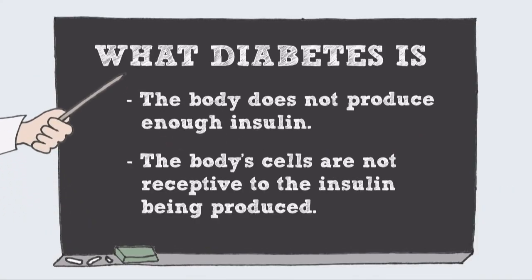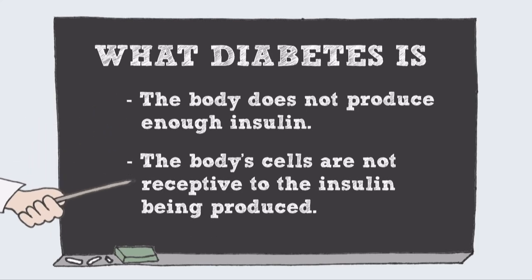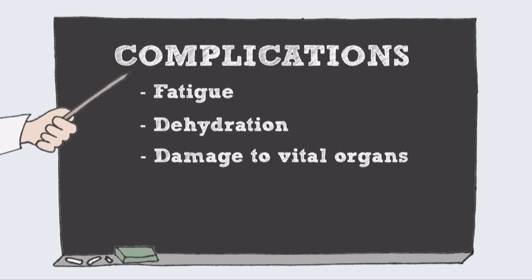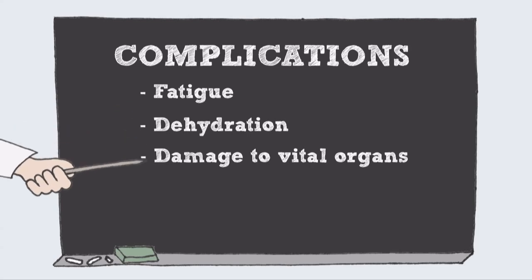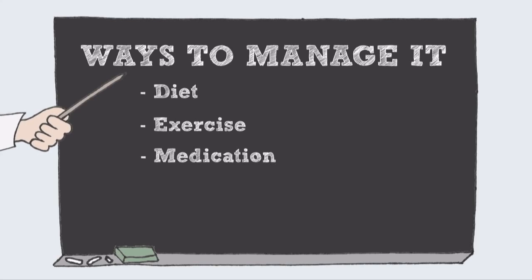Okay, let's review. We've talked about what diabetes is, a condition where either the body does not produce enough insulin, or the body's cells are not receptive to the insulin being produced. We've seen what complications can arise from it, such as fatigue, dehydration, and damage to vital organs. Finally, we've discussed ways to manage it through diet, exercise, and medication.